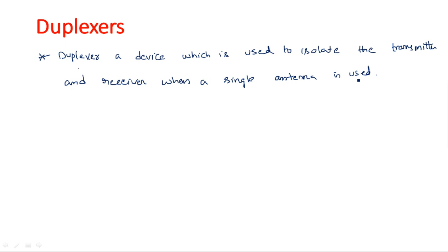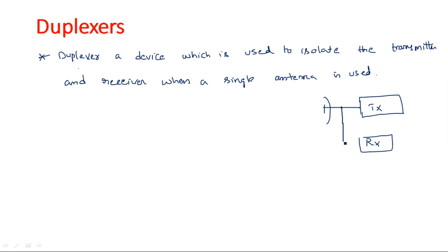A duplexer is a device used to separate the transmitting and receiving sections when a single antenna is used. If we are using two separate antennas for both transmitter and receiver, we do not need to use a duplexer. So when we use a single antenna for both transmission and reception, we should definitely use a duplexer to separate the transmitting and receiving signals.